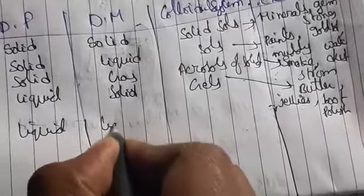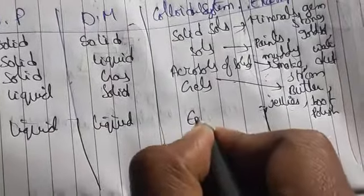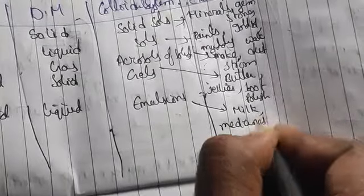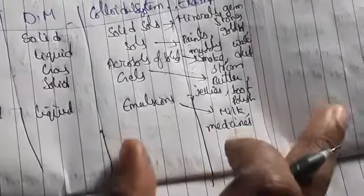If dispersion phase is liquid and dispersion medium is also liquid, we get emulsions. Milk is an example — milk is a liquid with oil content also present as a liquid. Medicines, such as capsules containing liquid inside, are also examples of emulsions.